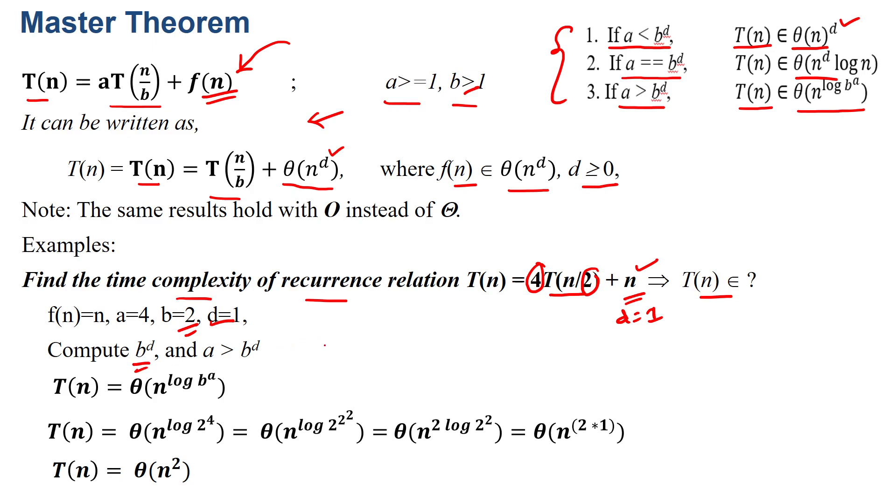B^d is 2^1 = 2. Then A = 4. So 4 is greater than B^d which is 2, which satisfies the third rule. Therefore T(n) = n^(log_b A). Substituting the A and B values, we get log_2(4).